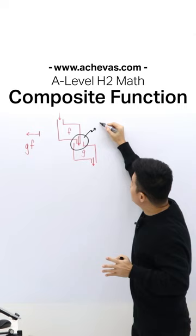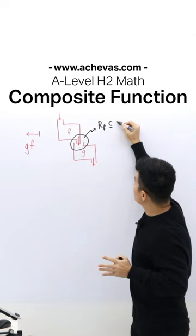I just need to make sure that everything that comes out from F is going to be possible to go into G. So the range of F must be a subset of the domain of G.